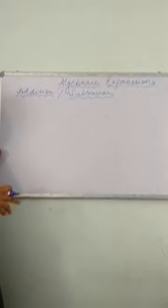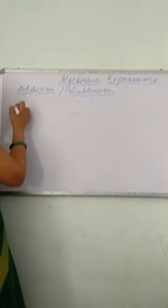So when we are talking about the addition of two algebraic terms, it means we can add two algebraic terms if and only if they are like terms. And if the terms are unlike, we will write them as it is.